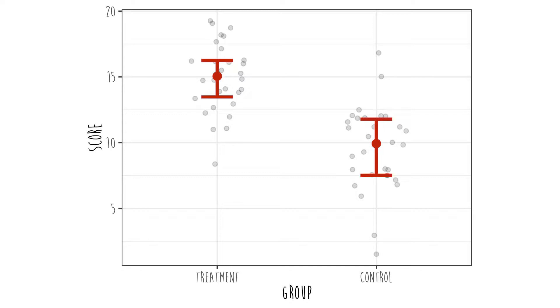So for example, in this one, we have higher scores on the left side than we do on the right side, meaning the treatment group has higher scores on the outcome than the control group. To learn more about these sorts of relationships and plotting them, see the video linked in the description.